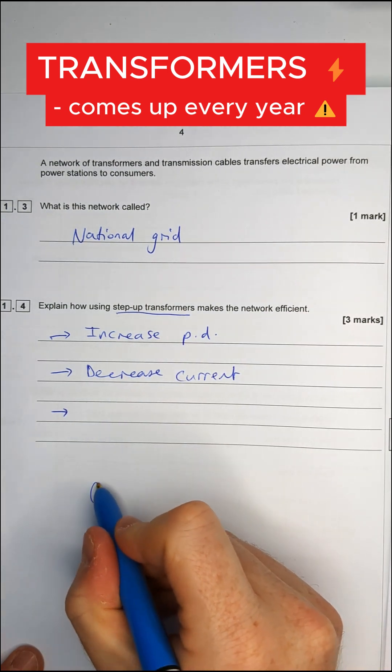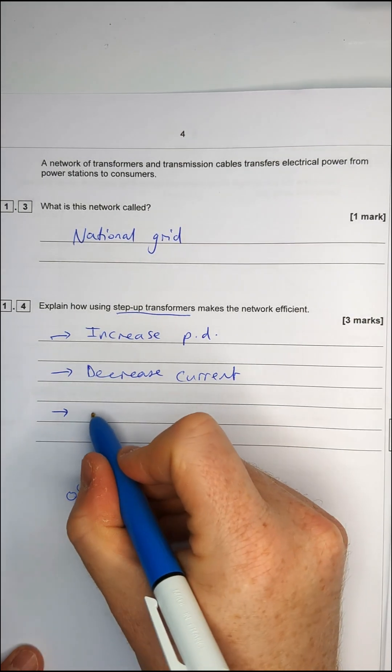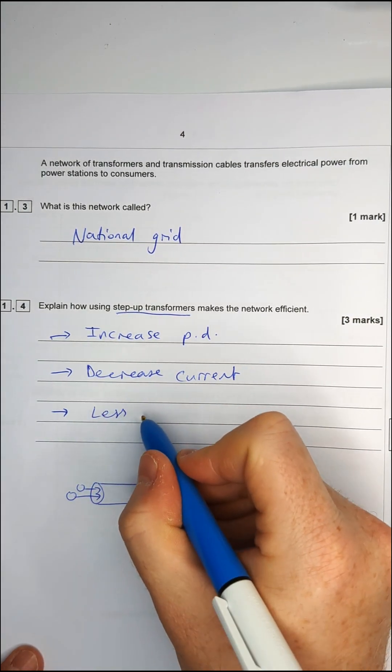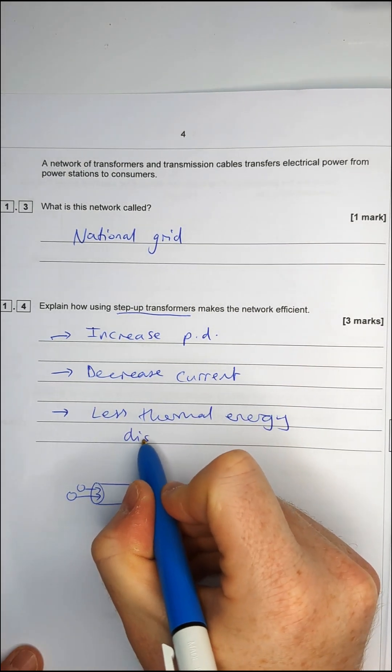As there's less current flowing through the wire, there's less electrons flowing through per second. So what that means is there's going to be less heat lost or less thermal energy lost or dissipated to the surroundings.